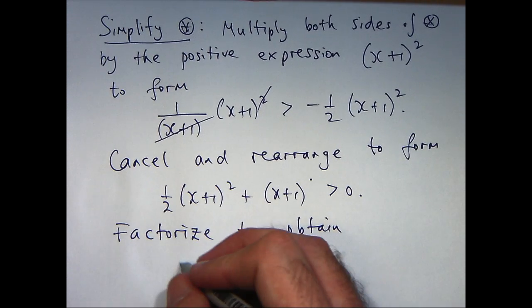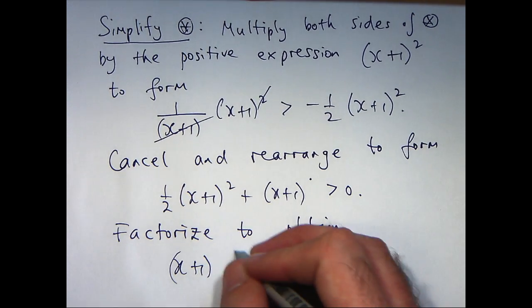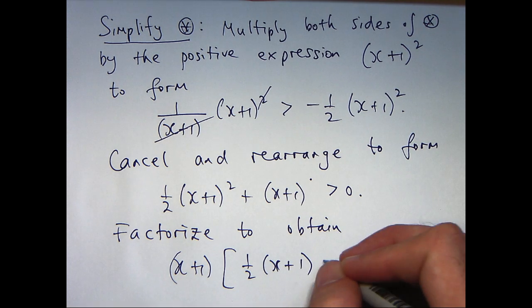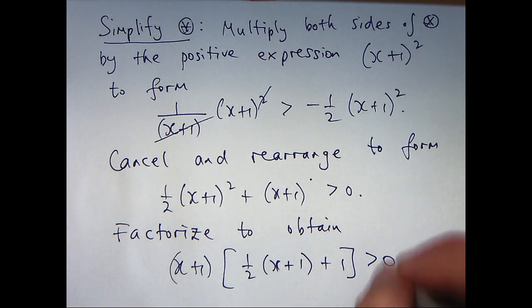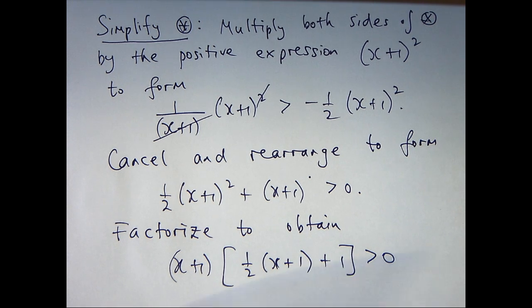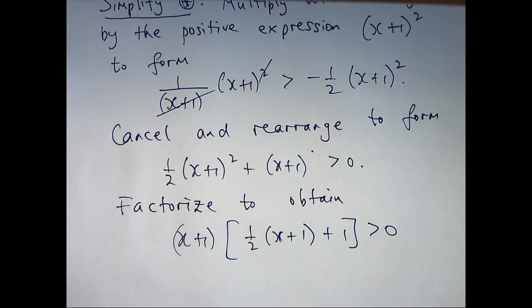Okay, so I'm going to take out a common factor of x plus 1 and I'm left with this. Alright, so if I expand this bracket now and simplify I'm going to get a half x plus 3 over 2 here and I can take a common factor of half out of that.